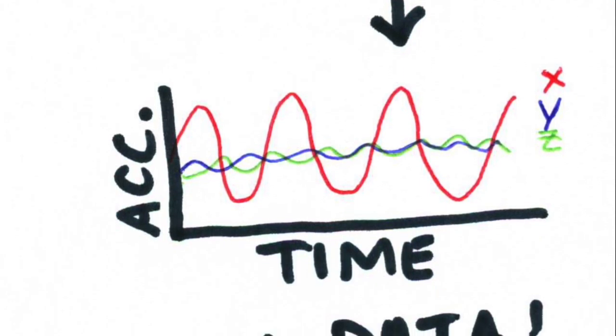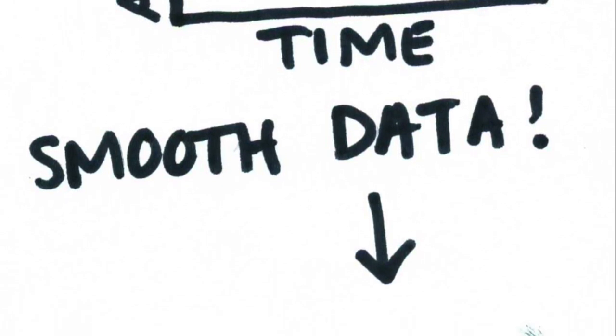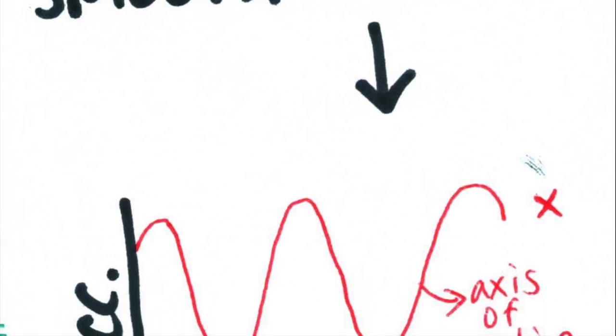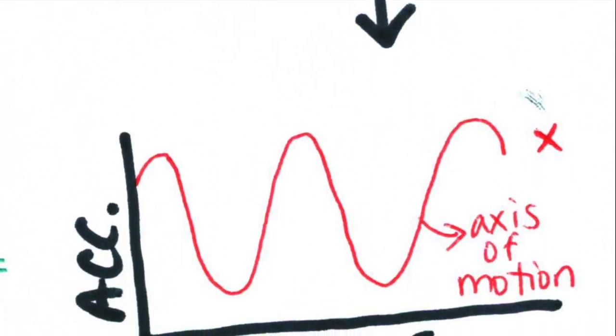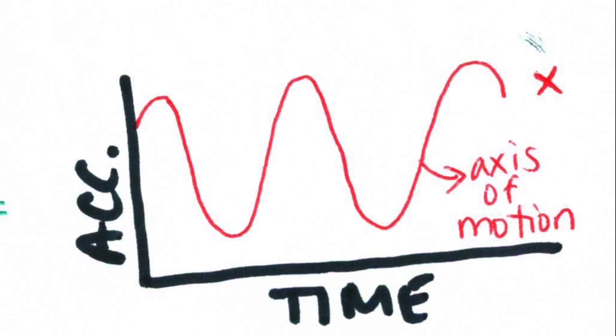Depending on how the pedometer is oriented, the three axes of motion will be oriented differently as well. Regardless of this orientation, one axis will always have a relatively large acceleration change in comparison to the others. This is the most active axis and will be used to calculate the acceleration change.